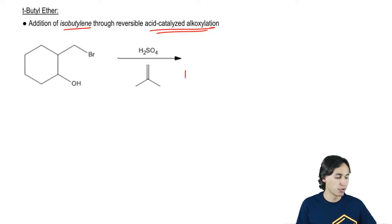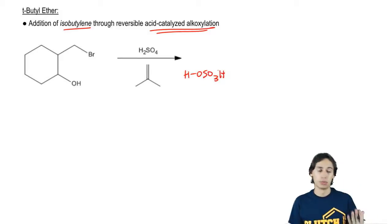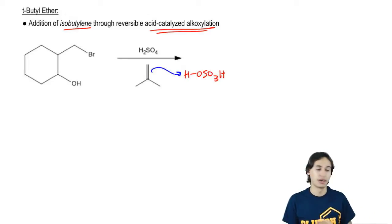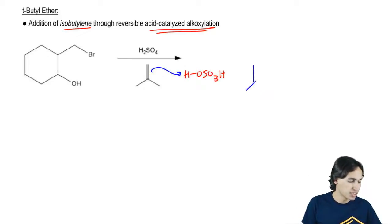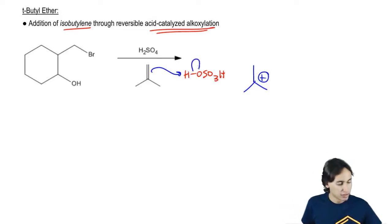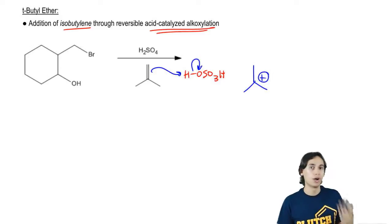In our first step, we're going to protonate our double bond through a normal addition mechanism. What this is going to give me is a Markovnikov carbocation. Remember that Markovnikov states that your carbocation goes in the more stable position. After I've done that, given the electrons to the O, what happens next?